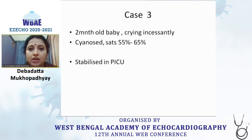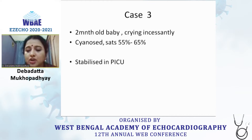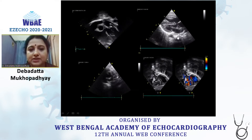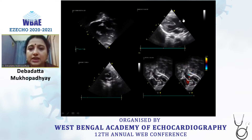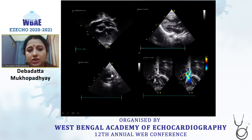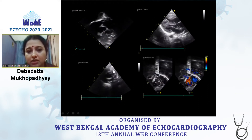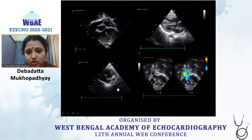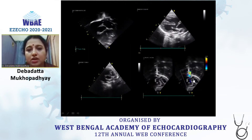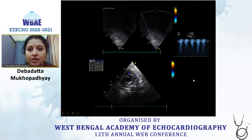Our third case is a cyanotic infant who came with incessant crying and desaturations and was stabilized in the PICU — a pretty usual case of tetralogy presenting with spells. We can see the large VSD with overriding of the aorta and also the outflow tract malalignment causing pulmonary obstruction. The subcostal sweep confirmed no extra VSDs.